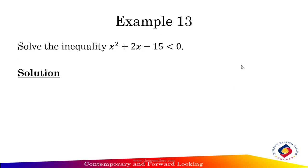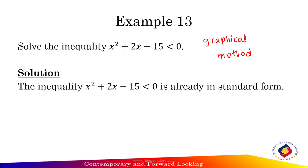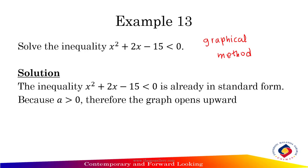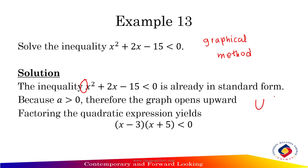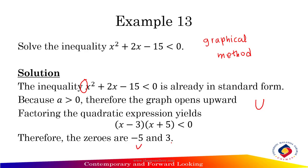Example 13: Solve the inequality x² + 2x - 15 < 0 using the graphical method. The inequality is already in standard form. Because the coefficient of x², a > 0, the graph opens upward — a smiley graph. Factoring the quadratic expression yields (x - 3)(x + 5) < 0. Therefore, the zeros are -5 and 3.